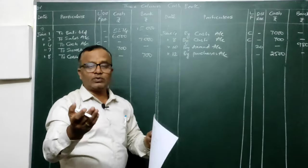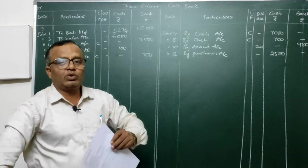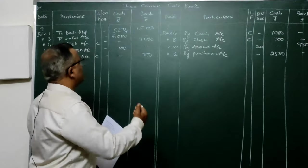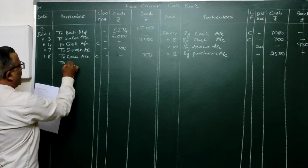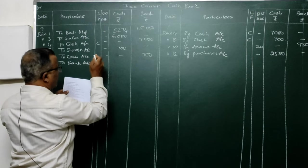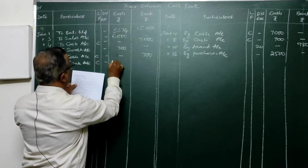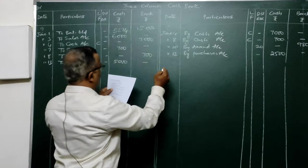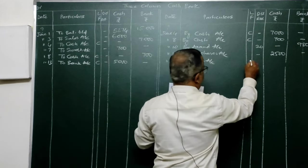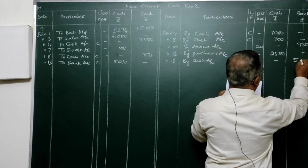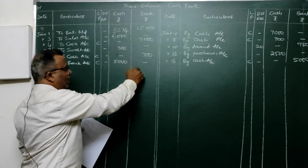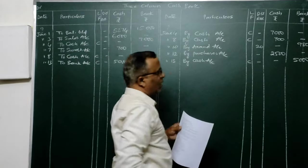Withdrew from bank for office use — entry: Cash Account Dr. To Bank Account. In cash account, debit 'To Bank Account' — 5,000. Since cash and bank are both involved, it is a contra entry. In bank column, post on credit side 'By Cash Account' — 5,000. If cash is deposited in bank it is debited; if cash is going out from bank it is credited.